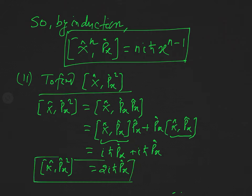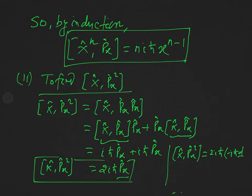If we substitute the explicit form of p̂x = minus iħ d/dx into this result, we get minus i² times 2ħ² d/dx, and since i² = −1, this becomes 2ħ²(d/dx). However, we should remember this commutator in the operator form 2iħ·p̂x, since that form is more important and easier to use.